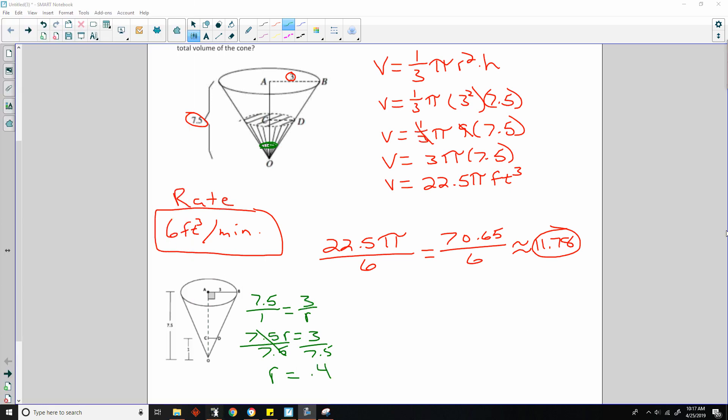And I get 0.4. So that's 0.4. It says, now we need to determine the volume of the cone when the height is one foot.